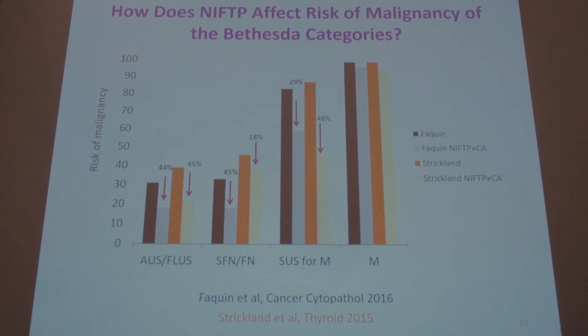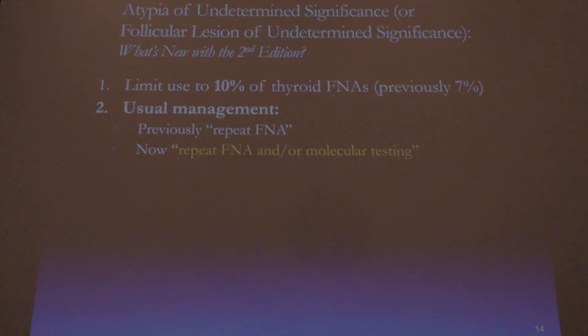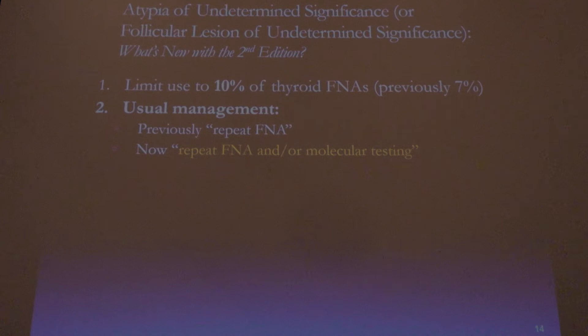Two studies looked at the impact of reclassifying NIFTP on Bethesda risks of malignancy. The biggest impacts are on the three indeterminate categories, because most NIFTPs are not called malignant — they're usually called AUS/FLUS, suspicious for follicular neoplasm, or suspicious for malignancy. We also had an original benchmark recommending that laboratories limit cases called AUS or FLUS to 7 percent; many laboratories had trouble complying with that. We're now being more generous and recommending this category should be no more than 10 percent of all thyroid FNAs interpreted.